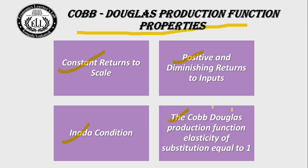Constant returns to scale means that a percentage increase in inputs gives the same percentage increase in output. For example, if inputs increase by 10%, output also increases by 10%. This is the first property assumed by new classical economists for the Cobb-Douglas production function.